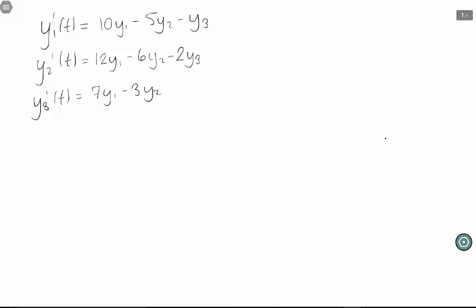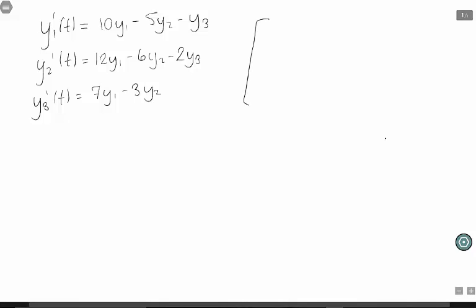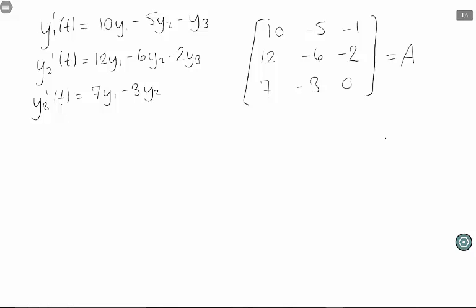The first step is to get the matrix of coefficients. Notice these are all in the proper order. So we can just copy this down: 10 minus 5 minus 1, 12 minus 6 minus 2, and 7 minus 3, 0. This is the matrix whose eigenvalues and eigenvectors we want to find.